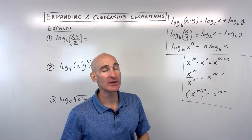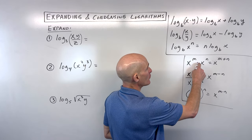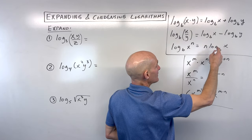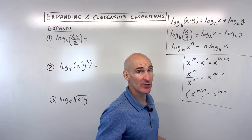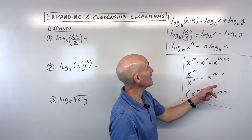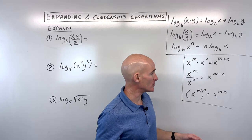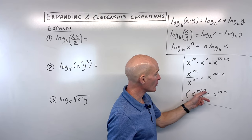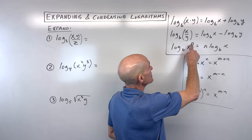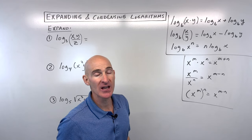You might remember the properties of exponents — when we multiplied, we added the exponents. See how these are multiplied and we're adding? If we divide, we subtract the exponents, just as we're subtracting the logarithms here. And if we have a power to a power, we multiply the exponents — just as when we bring down n, we're multiplying n times log of x.